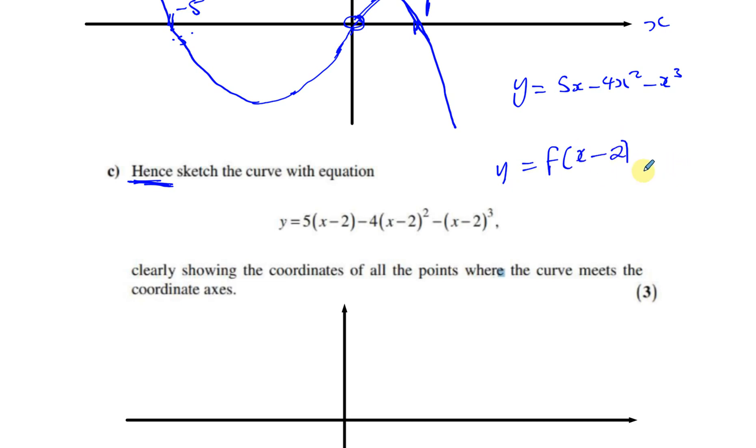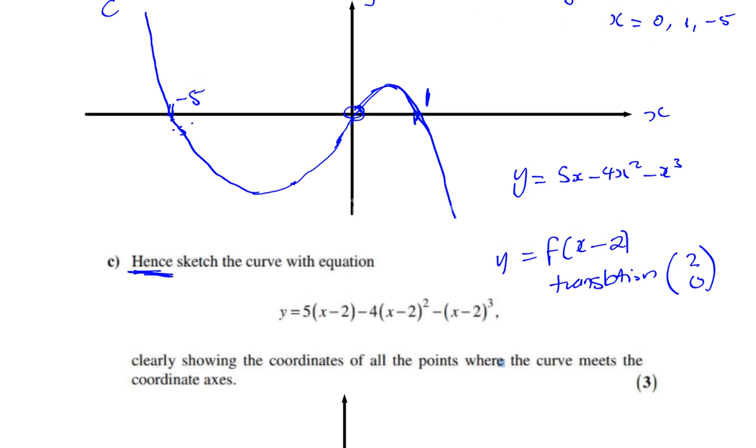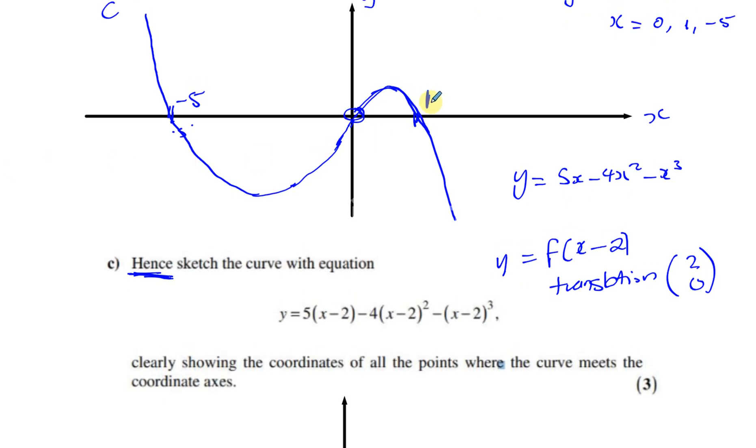So this is actually a translation. This is a translation of two units to the right. When it's inside the function, it acts horizontally and it acts kind of, you can say, opposite. So it says minus 2 means 2 to the right rather than 2 to the left. So that's basically what this is. So we don't have to do any calculations apart from knowing that the minus 5, 0 becomes 2 spaces to the right. So it's going to be minus 3, 0. The 0, 0 becomes 2, 0 and the 1 becomes 3, 0.